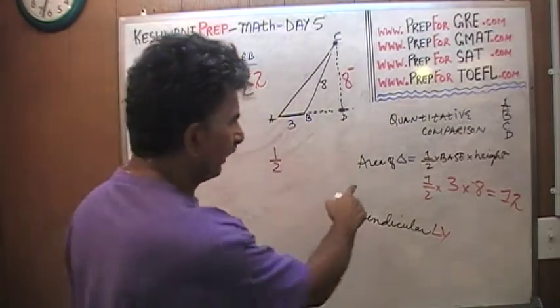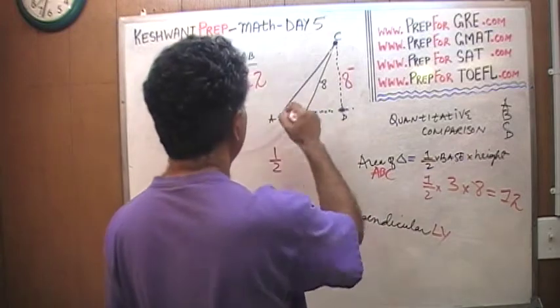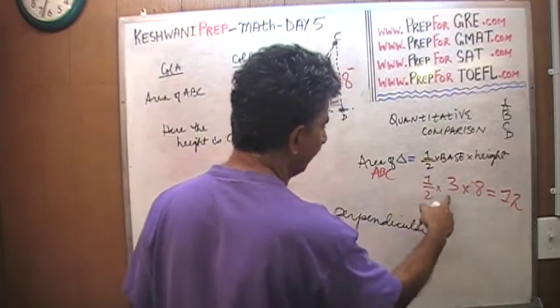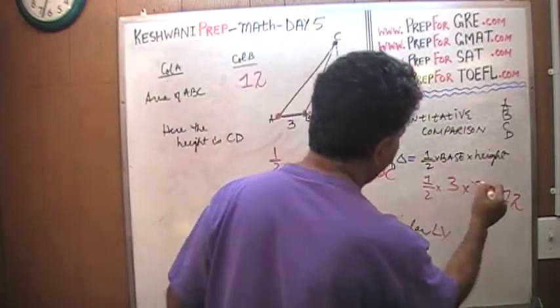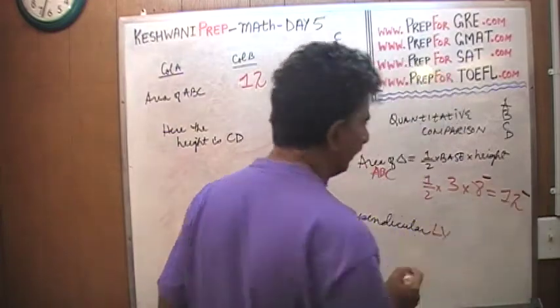Therefore, the area of this triangle, the area of the triangle ABC, this triangle ABC, is one half base, which is 3, times height, which is less than 8. And therefore, the area of this whole thing, whatever it is, is less than 12.